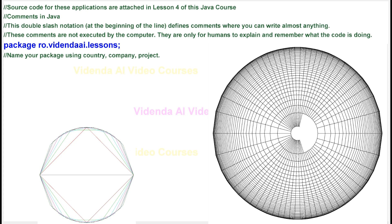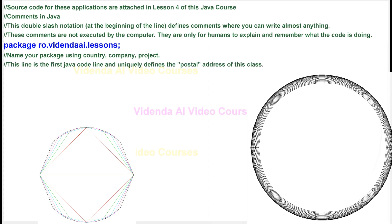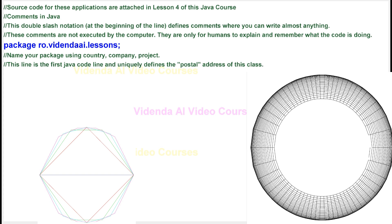Name your package using country, company, project. This line is the first Java code line and uniquely defines the postal address of this class.